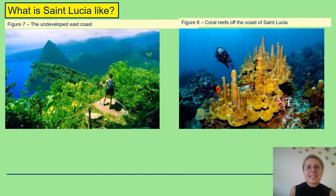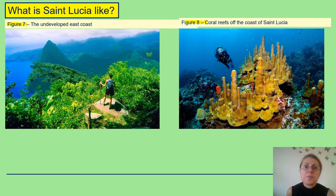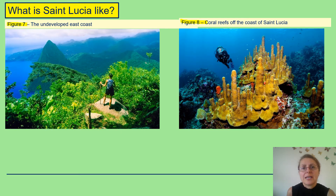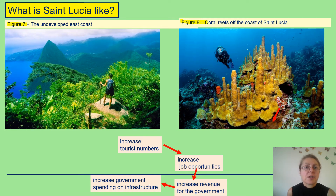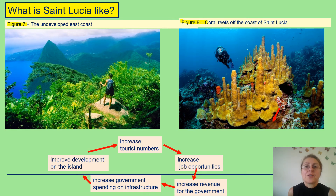Figures seven and eight show some of the reasons why people would want to holiday in Saint Lucia — from the undeveloped east coast in figure seven, to the scuba diver in figure eight exploring the coral reefs plentiful around Saint Lucia. These are key reasons why people want to holiday there and why the government wants to develop tourism. If they can encourage more tourists, they can increase jobs on the island, therefore increasing government spending on public services and infrastructure, leading to more development and further increases in tourist numbers.